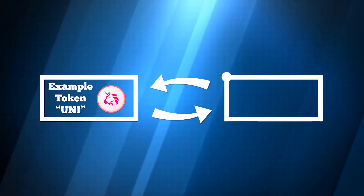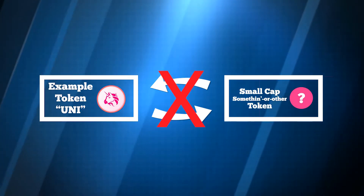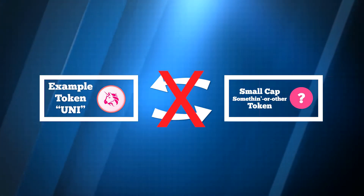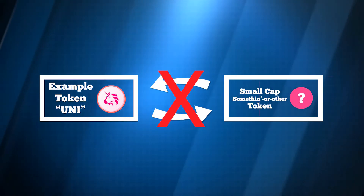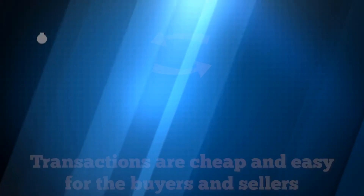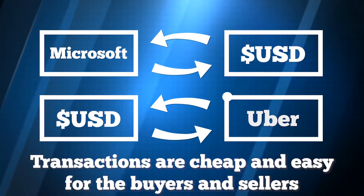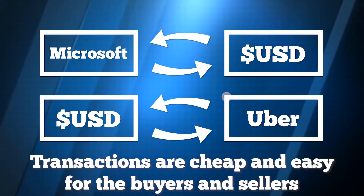But technically, it could be any pair. But if you don't pair your token with one of the standard trading mediums, there'll be considerably less demand for your pool. It'd be like pairing shares of Microsoft with shares of Uber — there could be somebody that wants to trade those two things, but why not just go from Microsoft to USD and then USD to Uber?